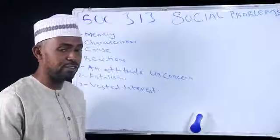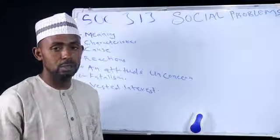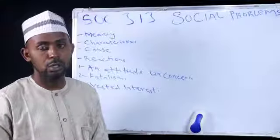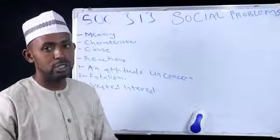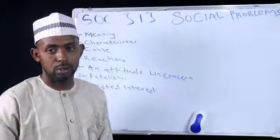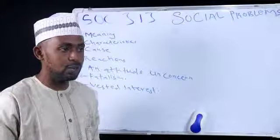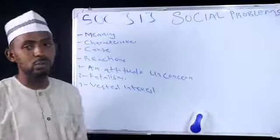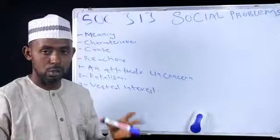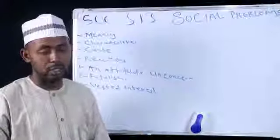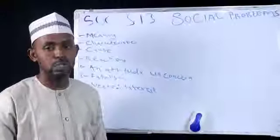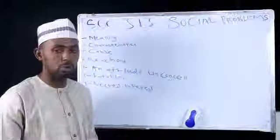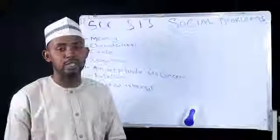Secondly, we have fatalism. Fatalism is a situation whereby all what is happening is attributed to destiny. Like some people with certain religious beliefs, they attribute everything that happens to destiny — that it was destined to happen to them. So they attribute social problems that are happening in society to destiny.